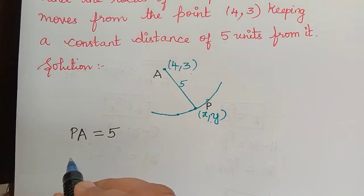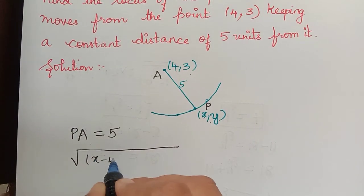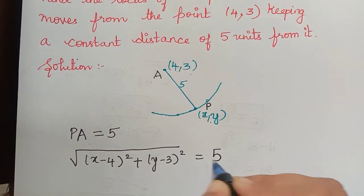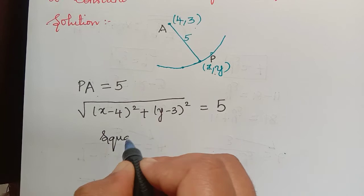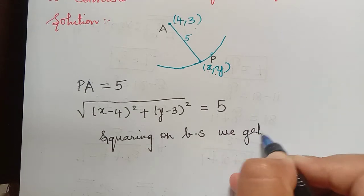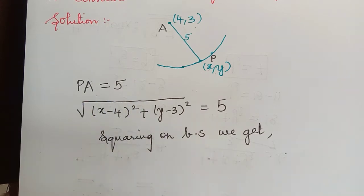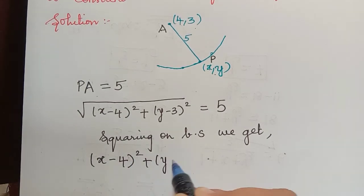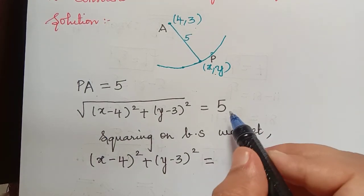So this can be done by using the distance formula. So the distance PA is given by square root of (x minus 4) the whole squared plus (y minus 3) the whole squared, and that is equal to 5. Now let us square on both the sides in order to remove the square root. So squaring on both sides we get 25.